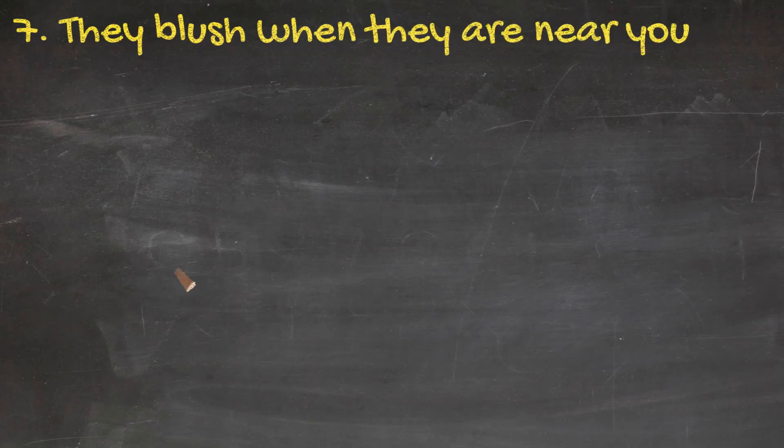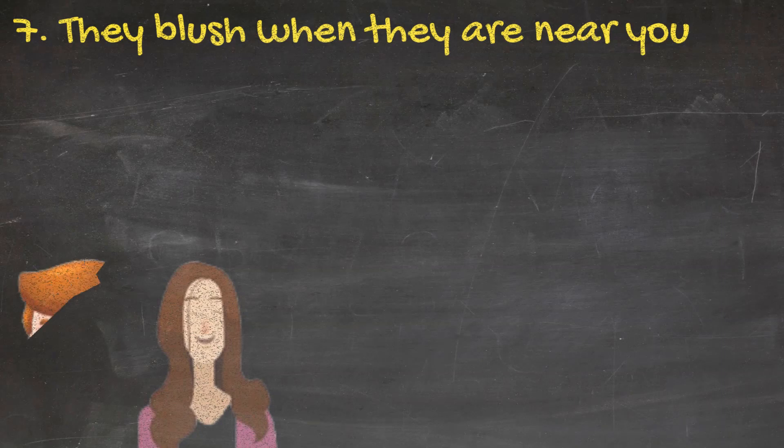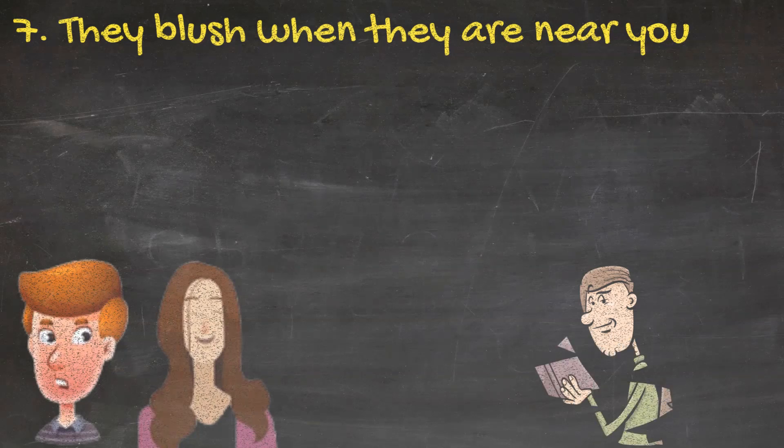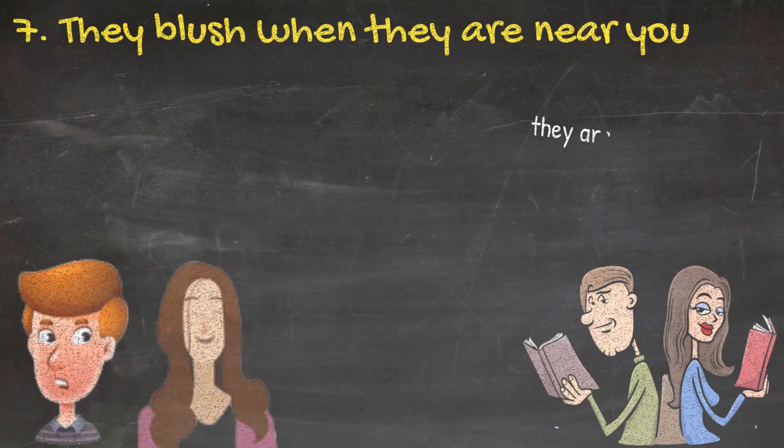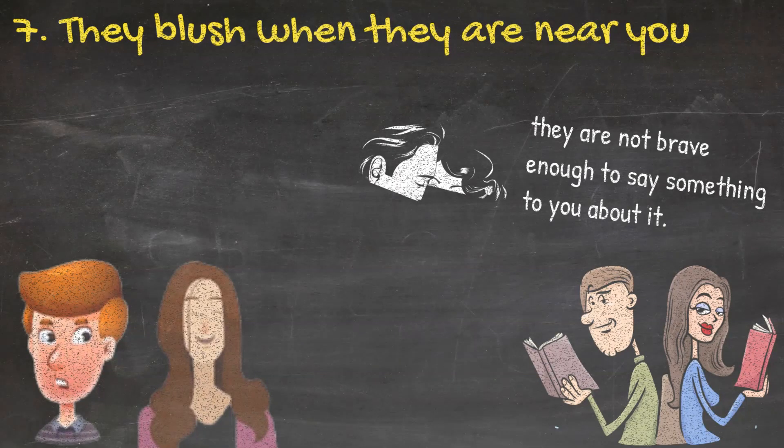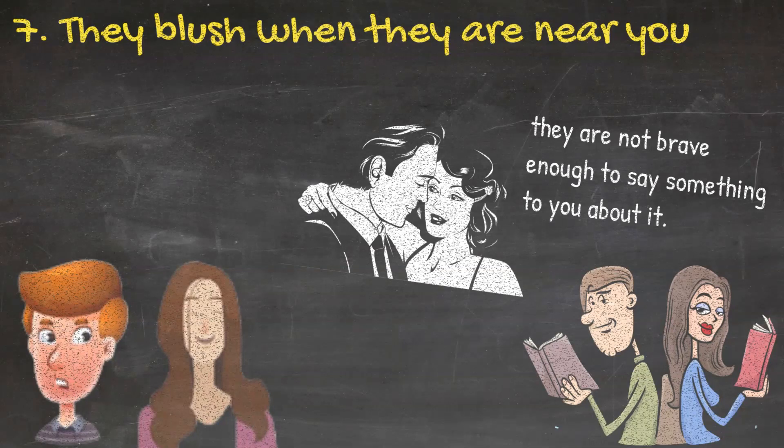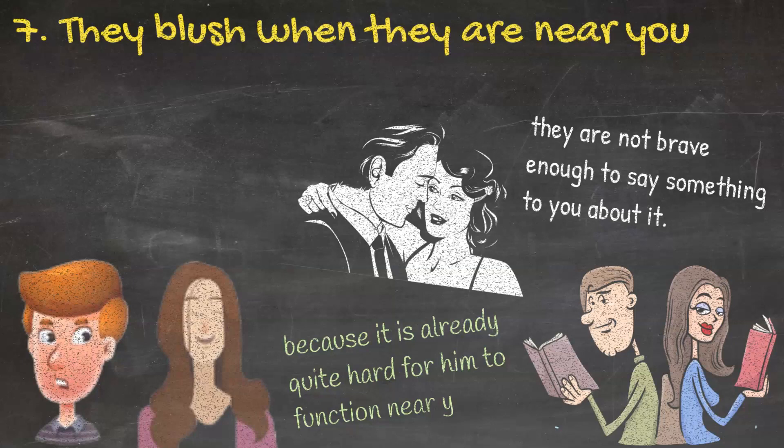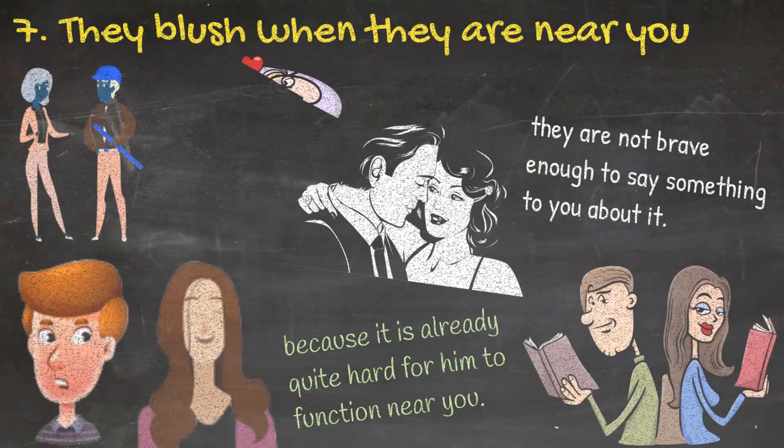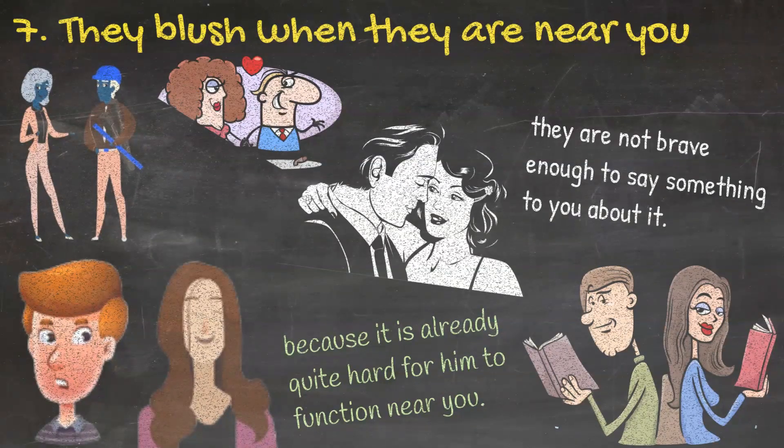Seven: They blush when they are near you. If you see someone blushing only in your presence and being all shy to even talk to you, it is a subtle sign that they like you. They like you more than you can imagine and their face color says it all, but they are not brave enough to say something to you about it. If you see a man acting like this, don't be too harsh on him and don't play with his feelings because it is already quite hard for him to function near you. If you are not interested in him, try to talk to him, be polite, and don't offend him. On the other hand, if you like him, just go ahead and enjoy your love trip.